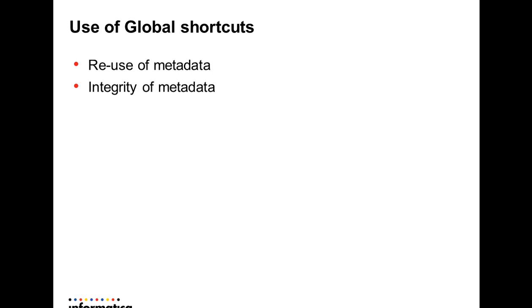What is the use of global shortcuts? The primary uses are reusing metadata and maintaining the integrity of metadata. We can reuse metadata between repositories by creating a global shortcut. When the original object changes in the global repository, all shortcuts automatically reflect those changes. Note that if a folder is not shared in the global repository, we can only make a copy of the object. The global and local repositories should also have comparable code pages.